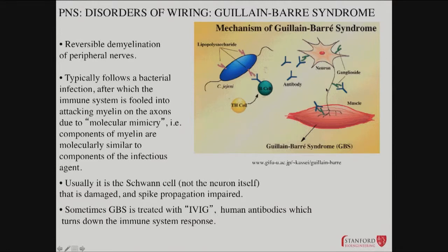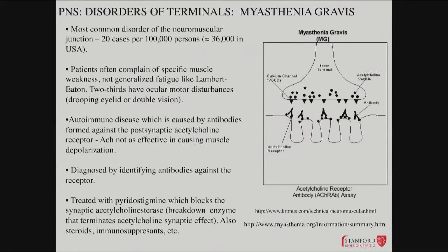Guillain-Barré is serious but reversible. Some of the more difficult disorders include myasthenia gravis, a disorder of the neuromuscular junction. It's pretty rare, but in aggregate there are probably 30 to 40,000 people in the US who have this. It starts with a specific muscle weakness — usually in the ocular muscles, eyelids, or the muscles that control eye motion — so you can end up getting double vision or drooping eyelids.